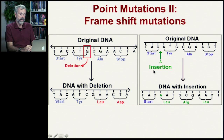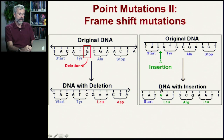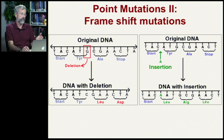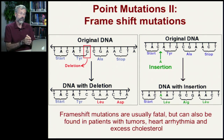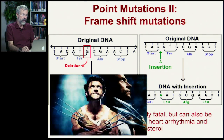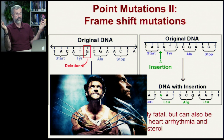Another way to get a frameshift is through an insertion, where a new base pair is added to the long strand of DNA. Again, it shifts everything downstream, producing an entirely new set of amino acids in the protein. When you have something like this, it's a grotesque difference — entirely different kinds of proteins than were ever present before. These frameshift mutations are usually fatal, but they have been found in some people who survived to adulthood, though they tend to have many tumors, heart arrhythmia, and excess cholesterol.